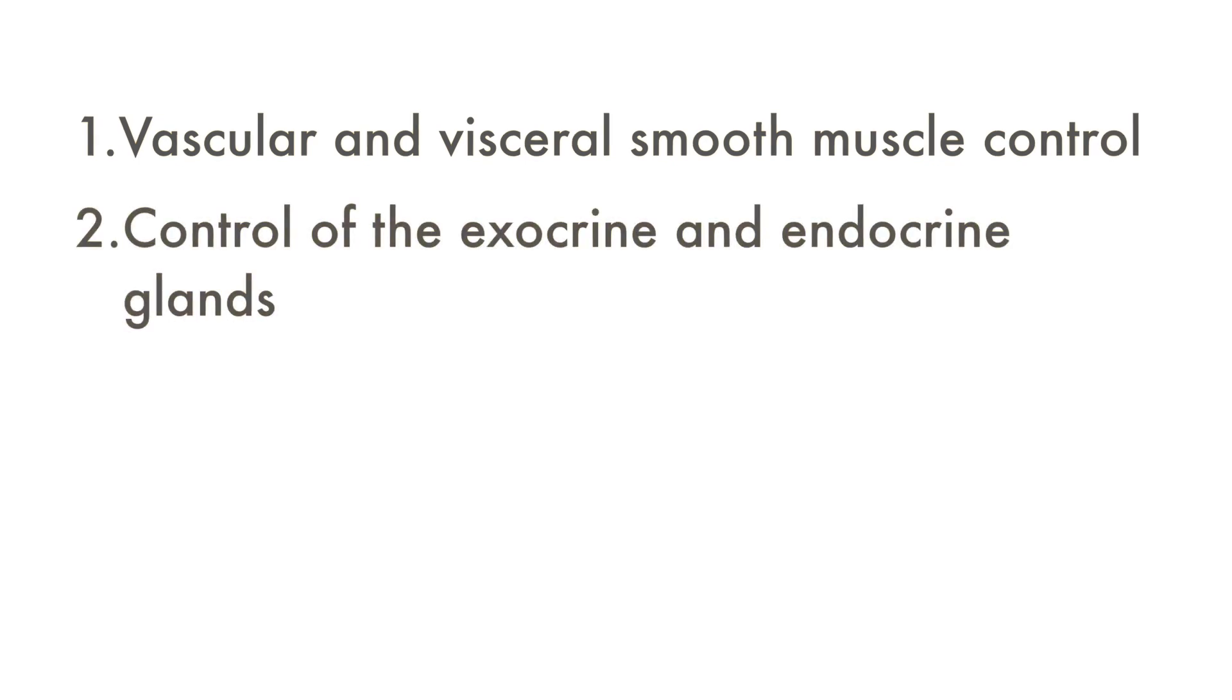Now that we're familiar with the structure of the autonomic nervous system, let us focus on its functions. There are four main functions the autonomic nervous system carries out: vascular and visceral smooth muscle control, control of the exocrine and endocrine glands, heartbeat, and energy and metabolism.